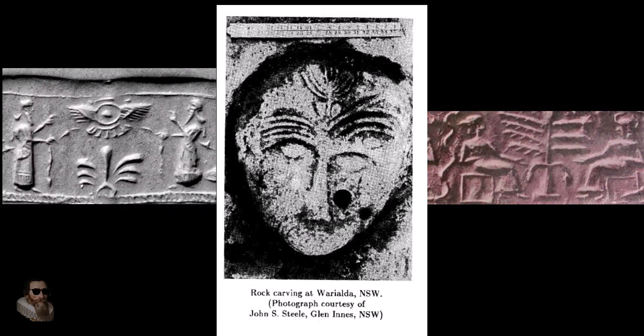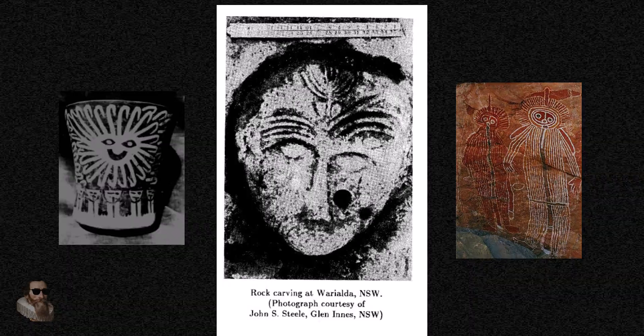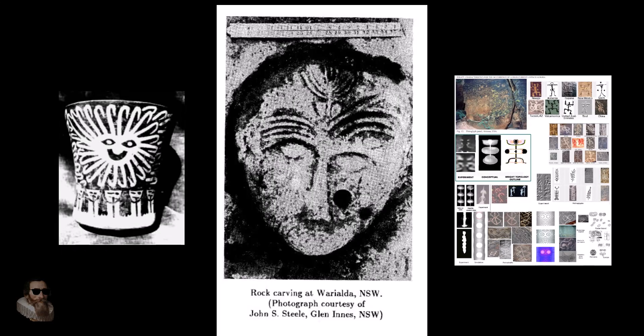This dual resonance — religious symbol on one hand, a plasma instability on the other — is precisely the overlap predicted by Dr. Anthony Peratt when he argued that ancient petroglyphs all over the planet were not abstract art or myth, but in fact human eyewitness recordings of intense auroral plasma phenomena witnessed during a period of cosmic catastrophe.